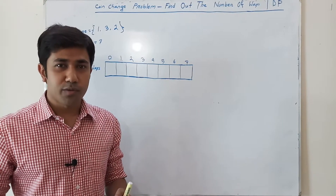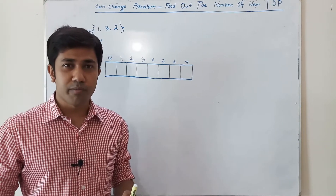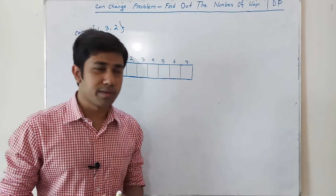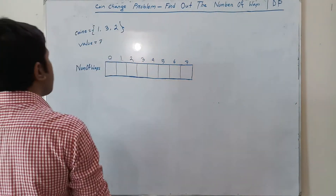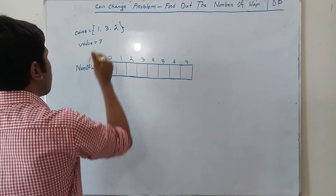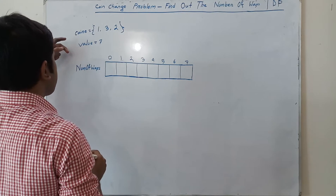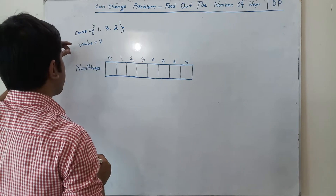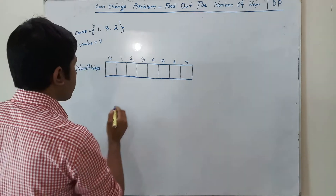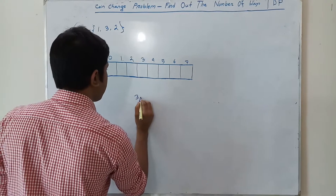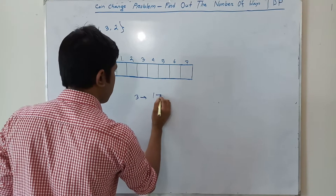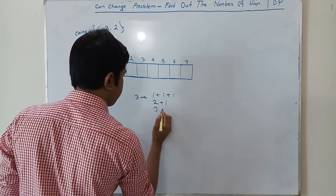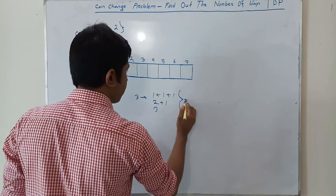Hello friends, my name is Saloudin. Today I will discuss the coin change problem — finding out the number of ways to make a value using a sequence of coins. Here we have three coins: 1, 3, and 2. By using those coins we will make the value 7. If the value is 3, we can make it as 1+1+1, or 2+1, or 3 — so we can make the value 3 in three ways.